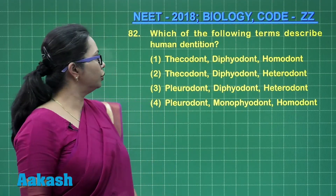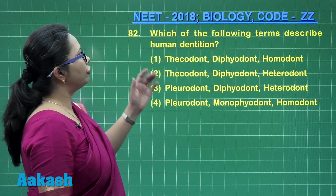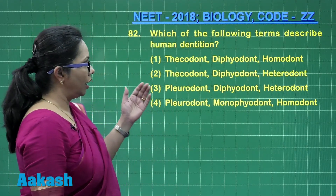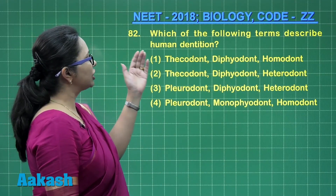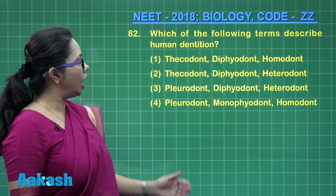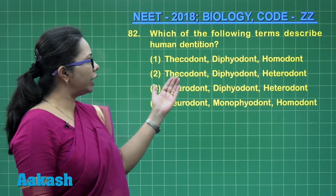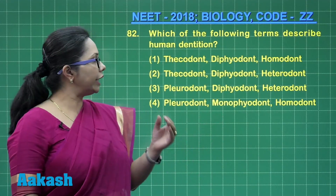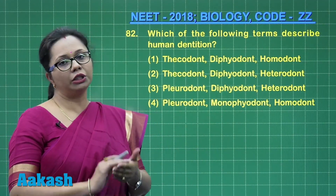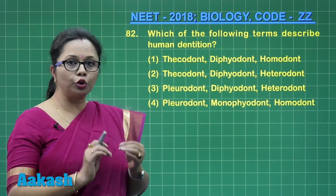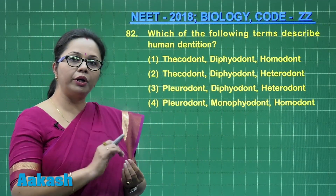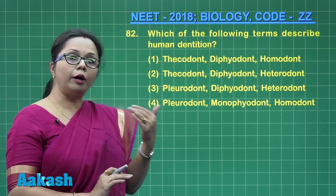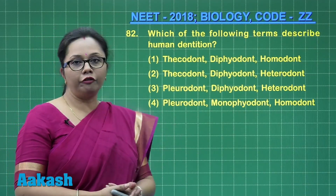Question number 82: which of the following terms describe the human dentition? Human dentition, just like other mammals, is thecodont — that means the tooth is embedded inside the socket of the jaw bone. They erupt twice in life,